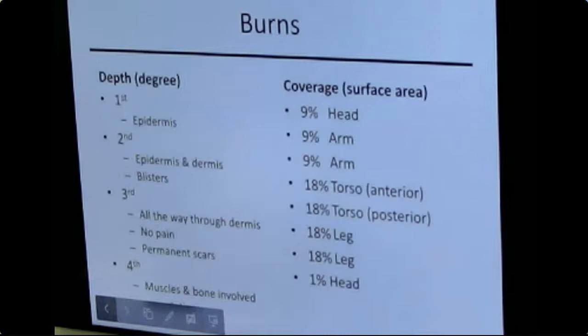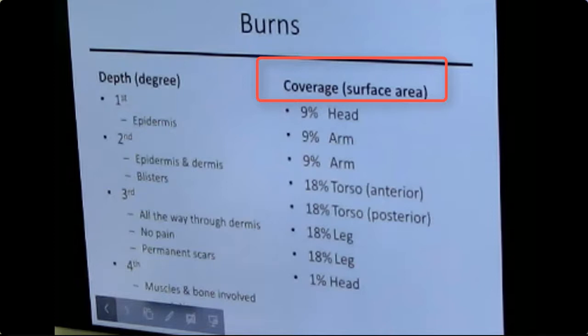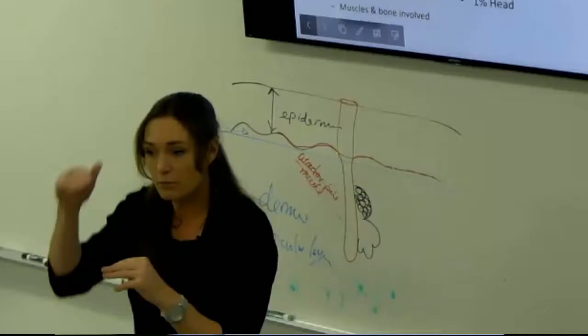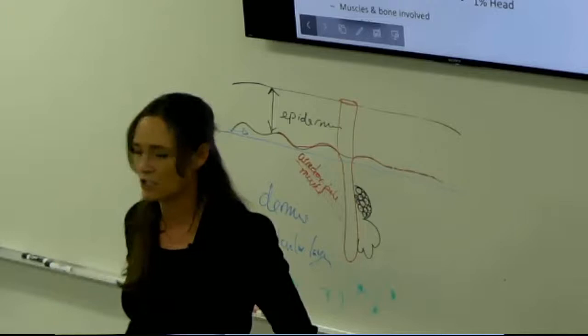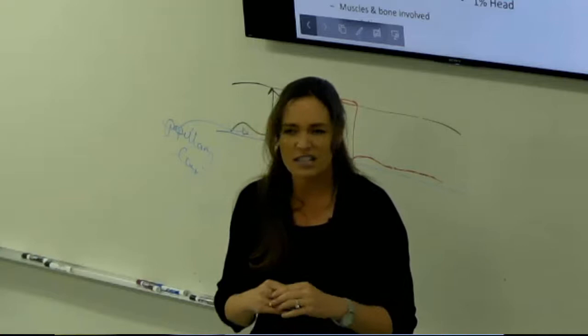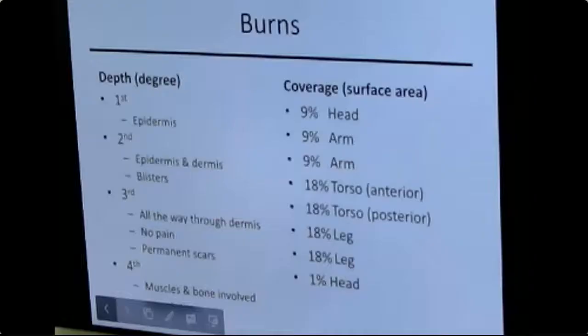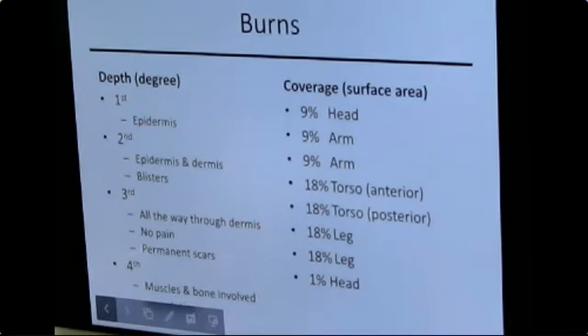The summary of skin repair: bleeding → inflammation → macrophage cleanup → fibroblast rebuilding → epithelium regeneration → scab falls off. Know these steps. The last topic is burns. Two factors matter: depth — the degree — and coverage — how much body surface area is affected. A deep burn over a tiny area differs from a shallow burn over a large area. First-degree burns affect only the epidermis.